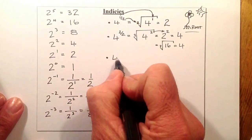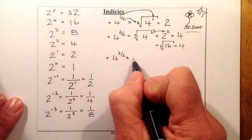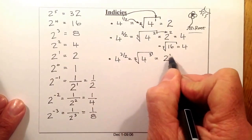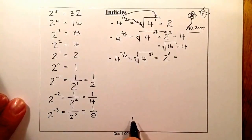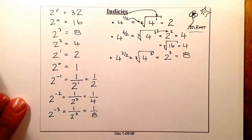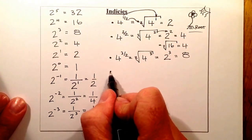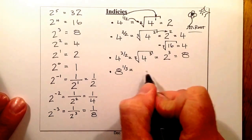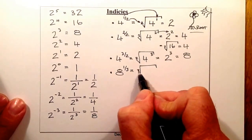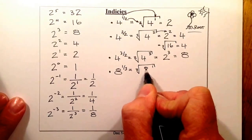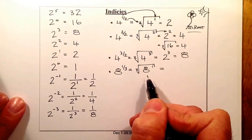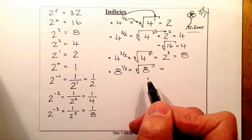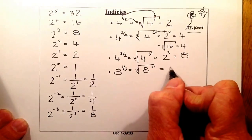For 4 to the power of 3 over 2: in root form, 2 is the root, 3 is the power, and 4 is inside. Square root of 4 is 2, raised to the power of 3 gives 8. For 8 to the power of a third: the root is 3, the power is 1, and 8 is inside. The cube root of 8 — what number times itself three times gives 8? Starting with 2: 2 times 2 is 4, times 2 is 8. So the answer is 2.